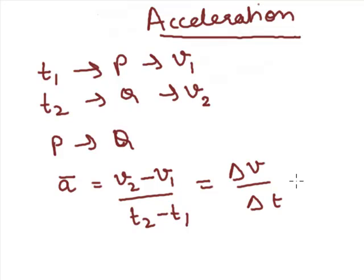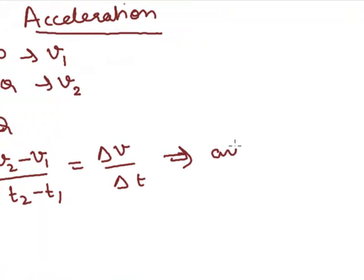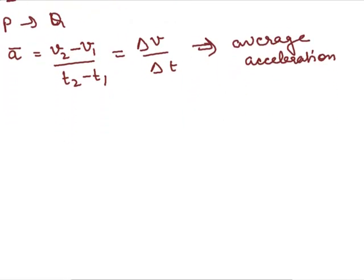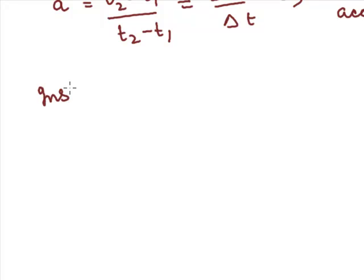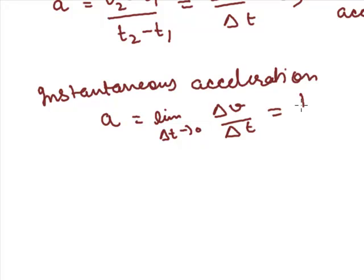This is the change in velocity of the object with the passage of time — this is average acceleration. After average acceleration, we define instantaneous acceleration. Instantaneous acceleration can be defined in the same way as we defined instantaneous velocity. So instantaneous acceleration is equal to the limit as delta t tends to 0 of delta v upon delta t, which is equal to dv upon dt.